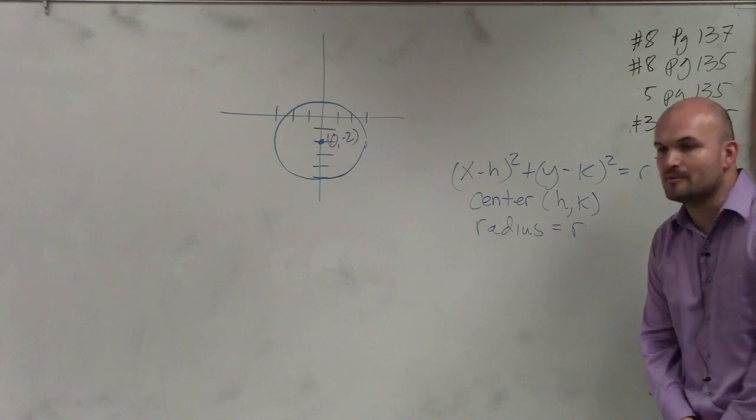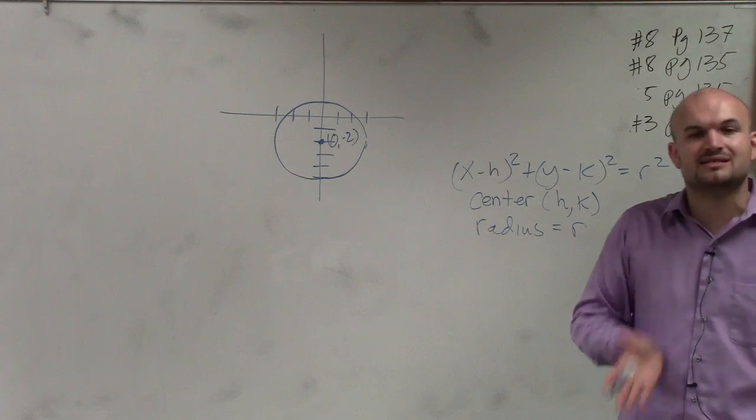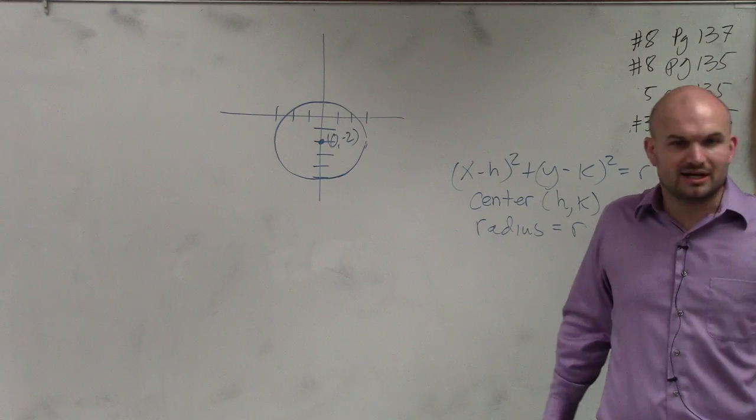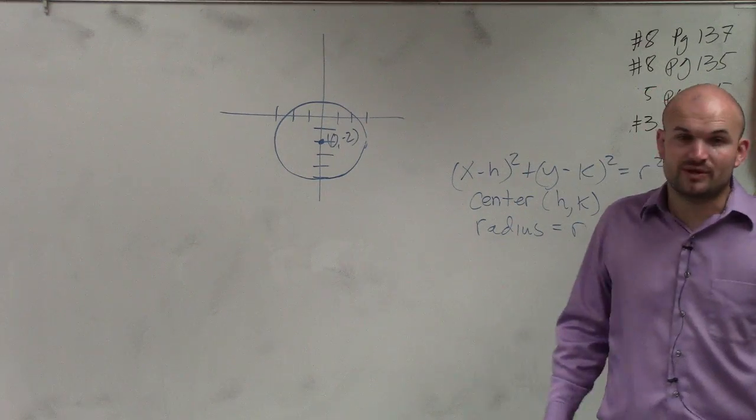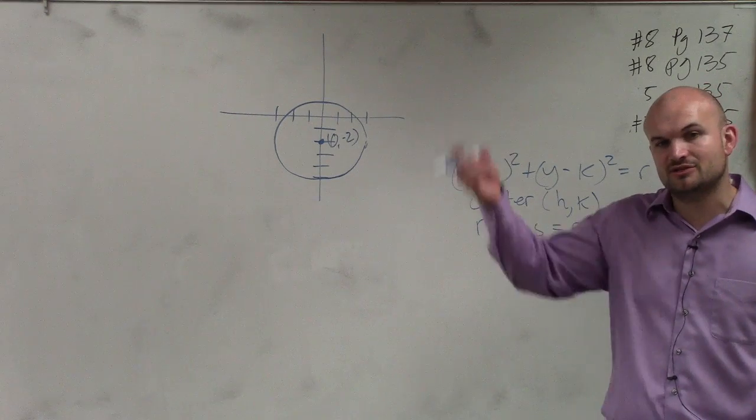Now, if that is the center, remember the radius is the distance from the center to any point on the circle. So I'll pick on Jordan. Jordan, do you want to tell me what the radius would be, from the center to the edge of the circle?